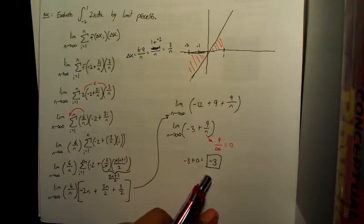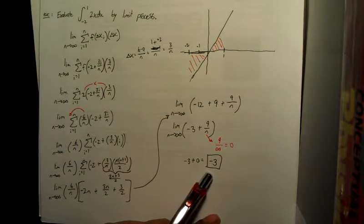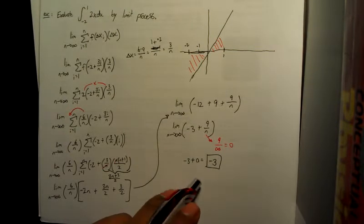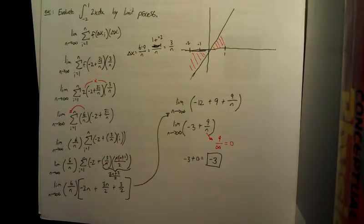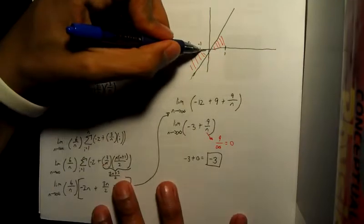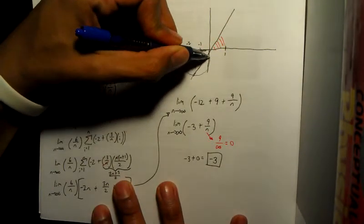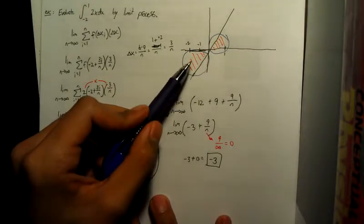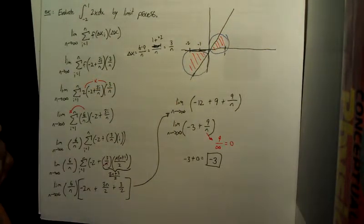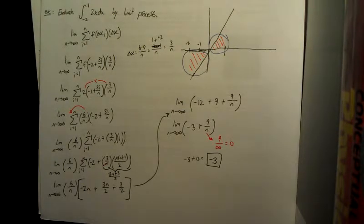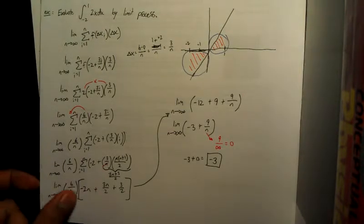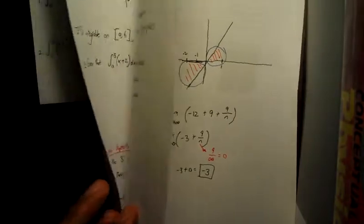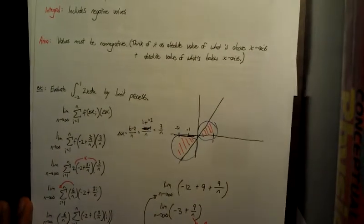Now, keep in mind that this is your definite integral. This does not represent the area under the curve. To find the area under the curve, you would have had to find out this section right here, separate from this section, and then take the absolute value of both and add them up, and that would give you the actual area under the curve.